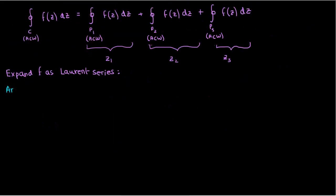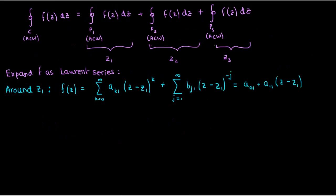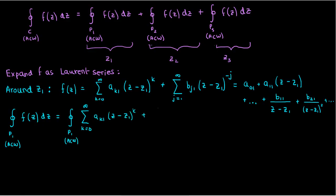Let's look at the Laurent series of f around z1. Note the presence of the extra 1 in the subscript to denote the fact that these are the Laurent series coefficients around z1. If I take the integral of f over the contour p1, then I know I can split that integral up into two parts, one of which is the integral over the analytic part of the Laurent series, and the other is an integral over the principal part.